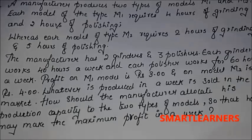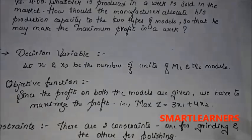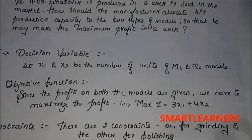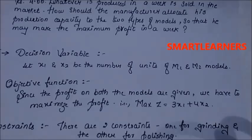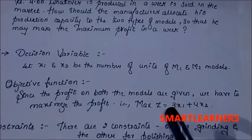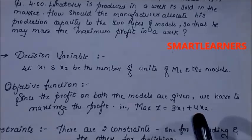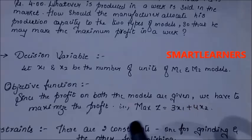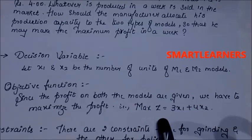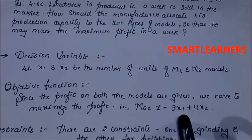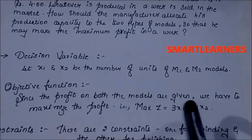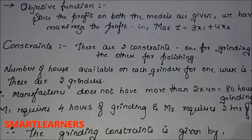In this problem we have two types of models, M1 and M2 — these will be our decision variables. There are two operations: grinding and polishing. Step one — decision variables: M1 and M2 are the two models, so our decision variables are x1 and x2, representing the number of units for M1 and M2 respectively. Step two — objective function: we are asked to maximize the profit, so Max Z = 3x1 + 4x2, where 3 is the profit for M1 and 4 is the profit for M2.